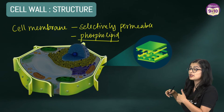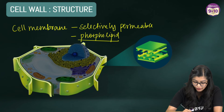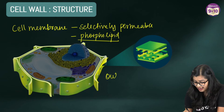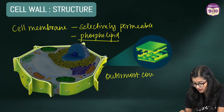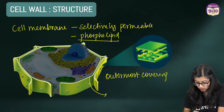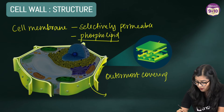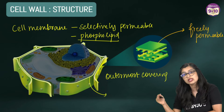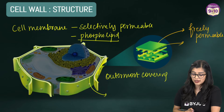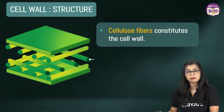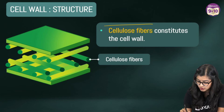While on the other hand, when we talk about the cell wall, we see that the cell wall in the case of plants is the outermost covering. So first we will find the cell wall and then we will find the cell membrane. The cell wall is freely permeable, which means it will allow all substances to pass through it. When we talk about what the cell wall is made of, in the case of plants it is made up of cellulose fibers.